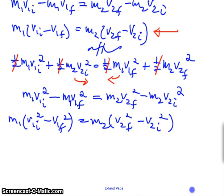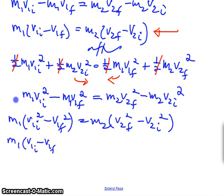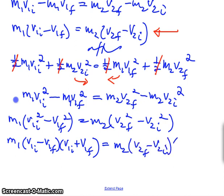There is a similarity between those equations. On the left side I've got V1 initial minus V1 final, and here I have V2 final minus V2 initial — matching the momentum equation. The problem is that I've got squared terms here, but I can factor them out using difference of squares. So I get M1 times (V1 initial minus V1 final) times (V1 initial plus V1 final) equals M2 times (V2 final minus V2 initial) times (V2 final plus V2 initial).